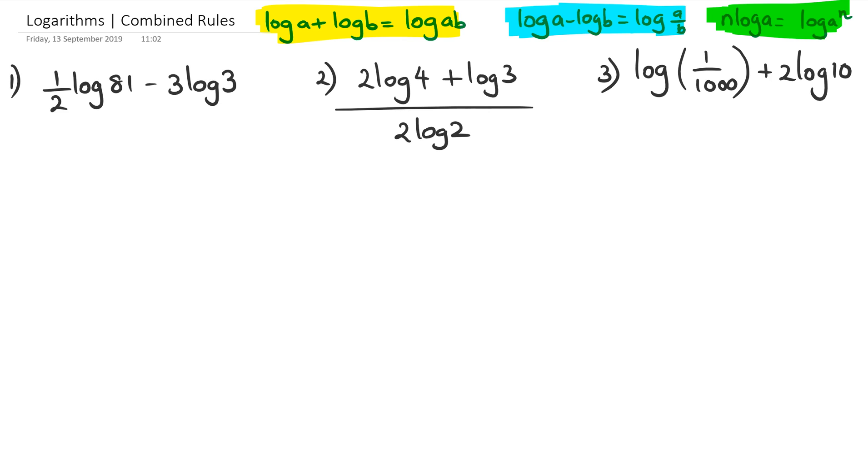First we've got ½log81. I'm going to use that green highlighted formula there, which means I can write ½log81 as log81^½ minus—and I've got log3 times log3—again using the green highlighted rule, which is log3^3. Now, 81^½ is 9, so I can write this as log9 minus—3^3 is 27—so log27.